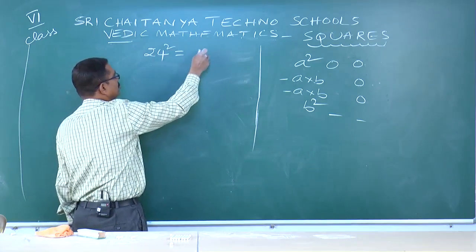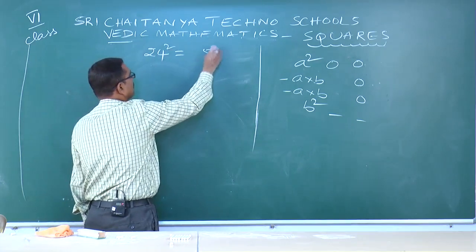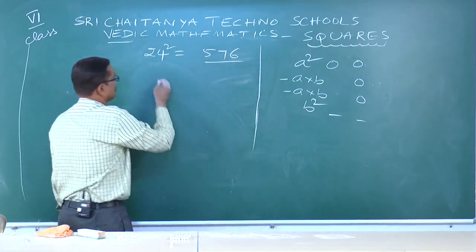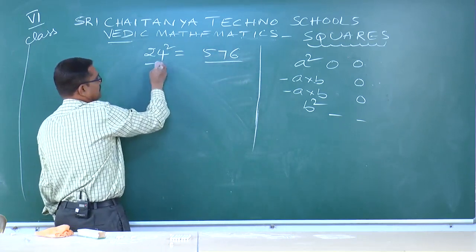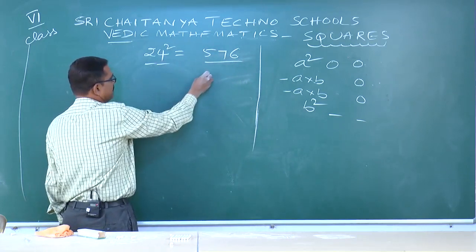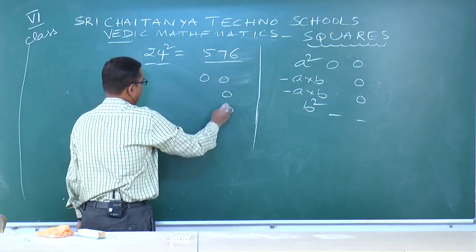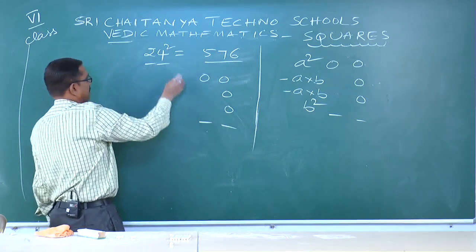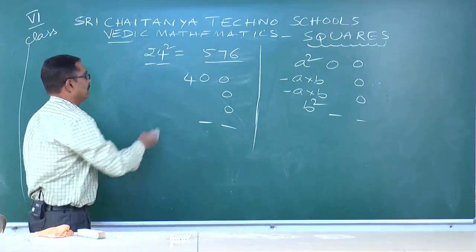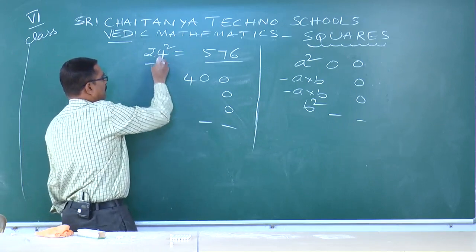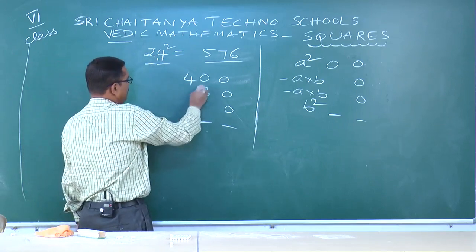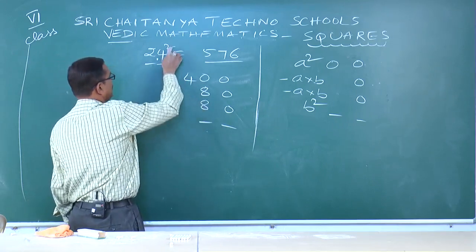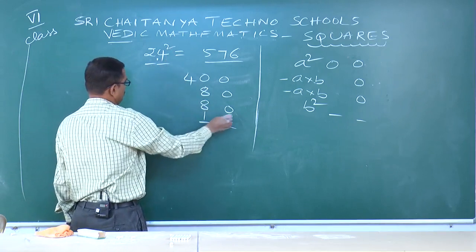Next: 24² = 576. Here a=2, b=4. Use formula: a²=2²=4, a×b=2×4=8, a×b=8 again, b²=4²=16. Add all — answer is 576.